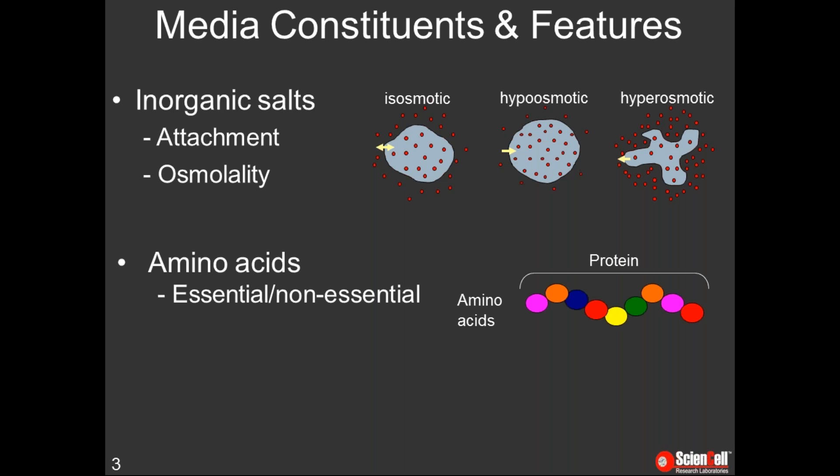Another important component is amino acids, which cells use to build proteins and grow. There are nine essential amino acids which can't be synthesized by cells and thus must be supplied in the media at an adequate concentration. There are 11 non-essential amino acids which can be synthesized by cells; however, during periods of rapid growth synthesis cannot keep up, so supplementing media with non-essential amino acids also aids in cell growth and viability. Different types of primary cells may require different combinations or concentrations of amino acids, which can make optimizing your own medium time-consuming.